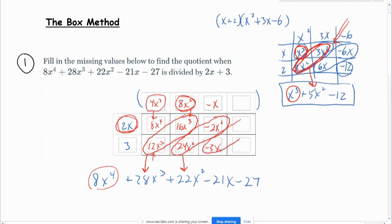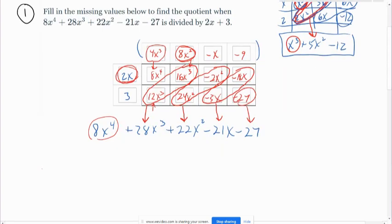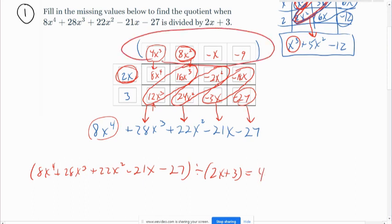And then we repeat the process again. These two boxes need to add up to negative 21x. So this better be negative 18x. And that makes this one at the top negative 9, and that makes this negative 27. And that matches that, so we have no remainder. So that divided in evenly. So now we can say that 8x to the 4th plus 28x cubed plus 22x squared minus 21x minus 27 divided by 2x plus 3, the answer is right up here at the top, that is 4x cubed plus 8x squared minus x minus 9.